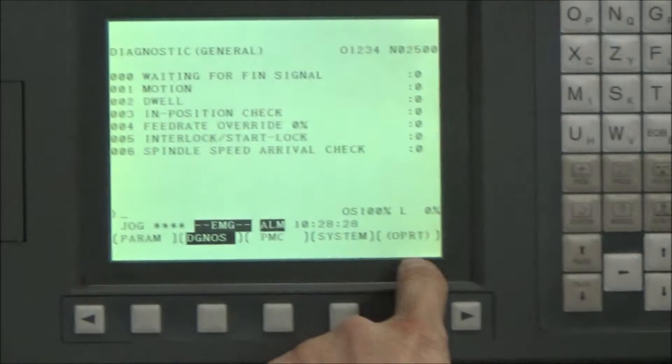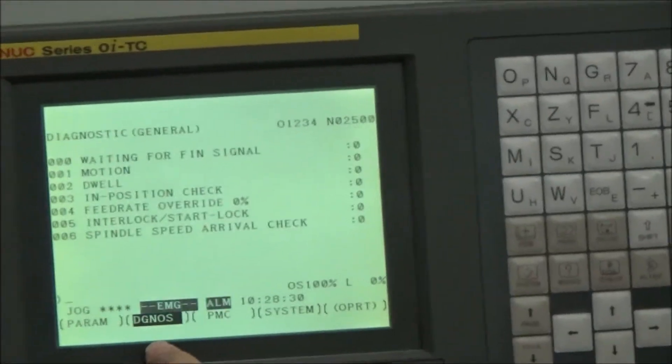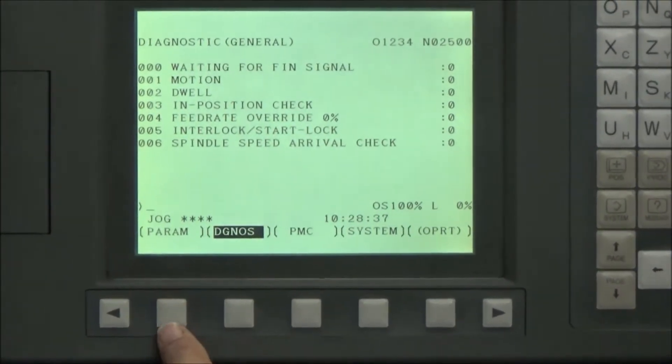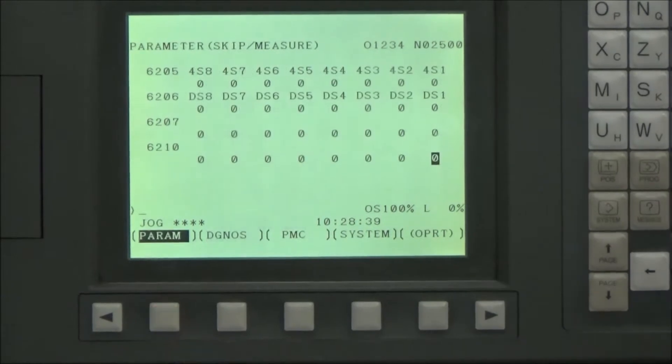Now I get into the system and across the bottom, this is under diagnostics, PMC, I want to see parameters. There's a soft key right there. I hit system, the parameter shows up there, I hit the key below, the soft key. I'm now looking at the parameters.